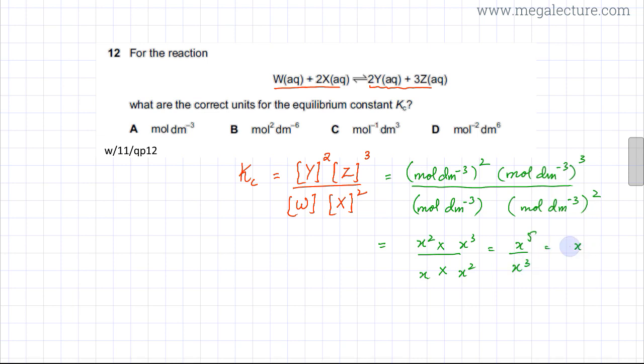If you cancel this, it becomes x². Substitute mol dm⁻³ back again—x was mol dm⁻³—so your final simplified unit is (mol dm⁻³)² or mol² dm⁻⁶.